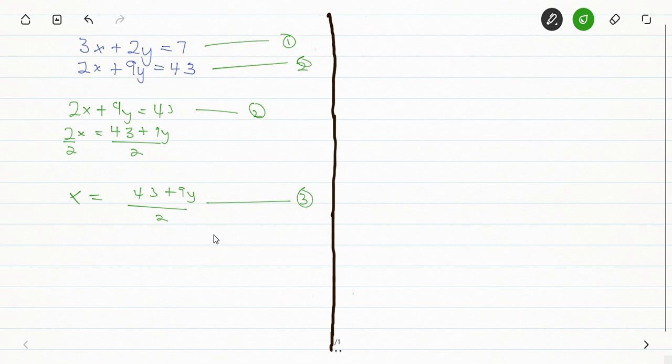Now we have x equals 43 minus 9y all over 2. Because we used equation 2 to get equation 3, we will substitute equation 3 into equation 1.